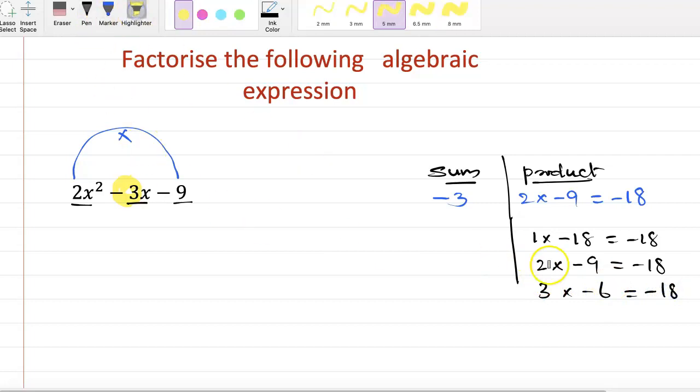Among these, 3 minus 6 is minus 3, so let us use this: 3 minus 6 equals minus 3. Let us break the middle term.